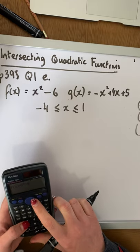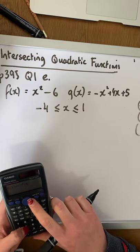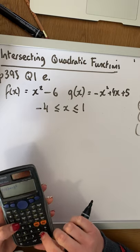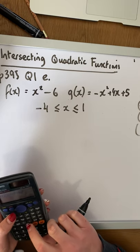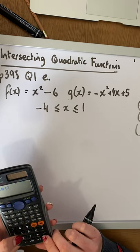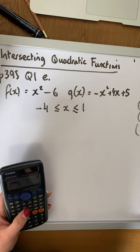And then for the second function, we have minus x squared, plus 4x, plus 5. Save, same start and end point, same steps.